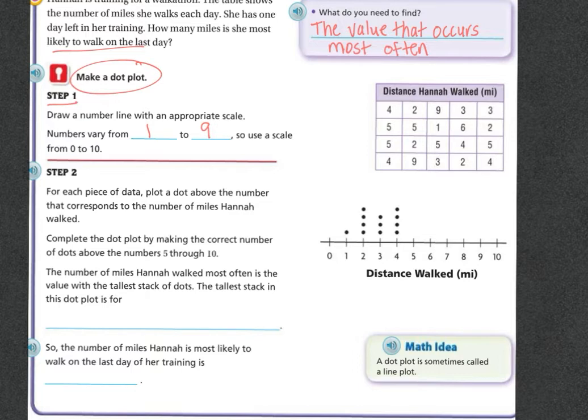The numbers of miles Hannah walked most often is the value with the tallest stack of dots. So they've already done the 4s. So we've got a 5 here, another 5, another 5. They've already... There's another 5, there's a 9, there's a 9, there's a 5, there's a 6, and there's a 5.